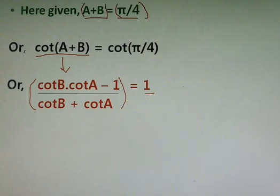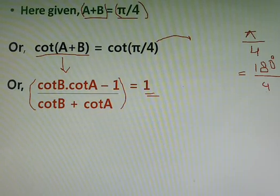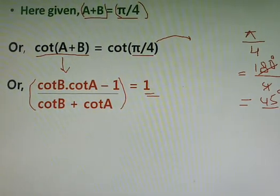And how does this one come? We all know that pi by 4 means 180 degree. In place of pi, we can write 180 degree divided by 4, that would be equals to 45 degree. Since pi by 4 is equal to 45 degree and we have cot here, so cot 45 degree is equals to 1.